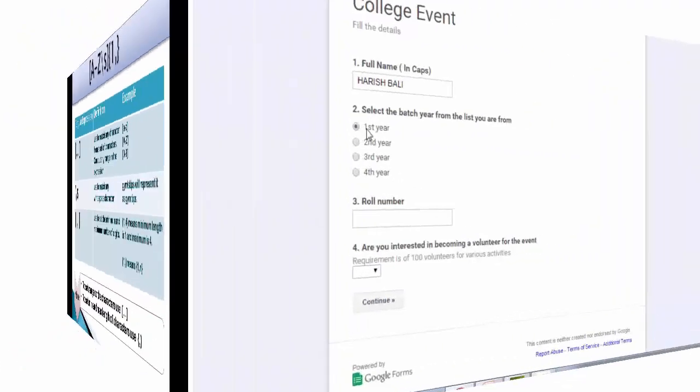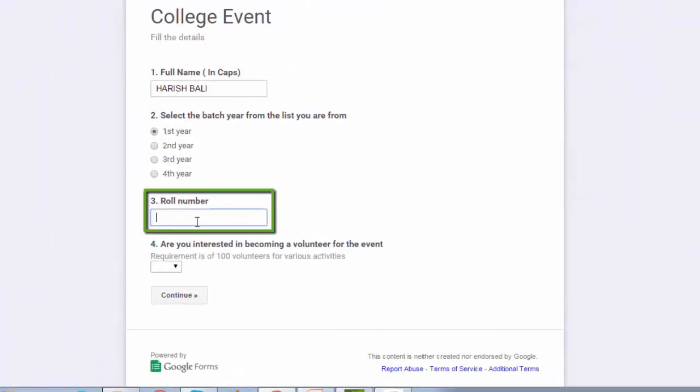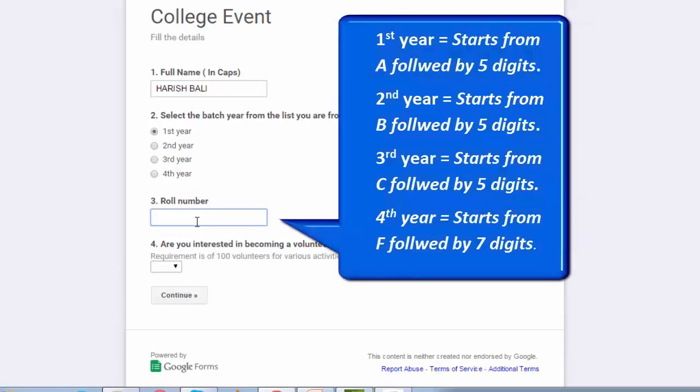Let me now go back to the form. Student can select his study year from first, second, third or fourth year and then go to roll number in the third question. Let's say roll numbers of this college are designed in such a manner that roll numbers of first year start from A followed by 5 digits, second year roll numbers start from B followed by 5 digits, roll numbers of third year students start from C followed by 5 digits and roll number of fourth year which is the final year start from F followed by 7 digits.